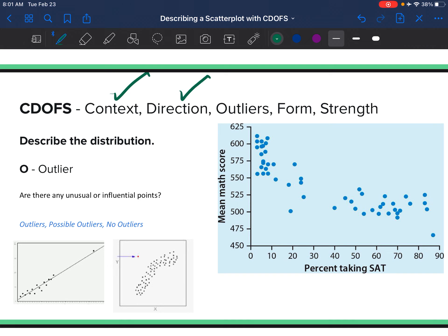Now we're looking at outliers. Are there any unusual or influential points? An outlier can be on the line but away from the group, or it can be away from the line and the group.